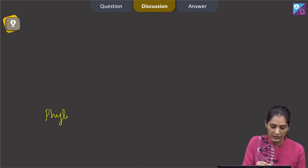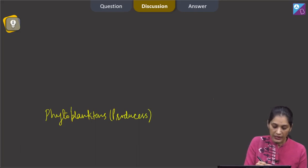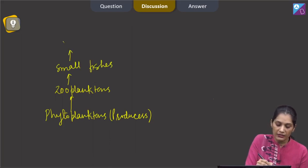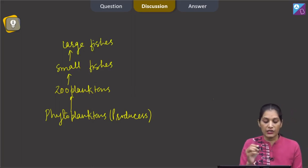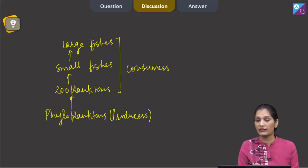you will find out that at the first trophic level there are phytoplanktons — they are producers. Then above the phytoplanktons are the zooplanktons, then small fishes, and at last you will find the large fishes. The zooplankton, small fishes, and large fishes are consumers whereas the phytoplanktons are the producers.